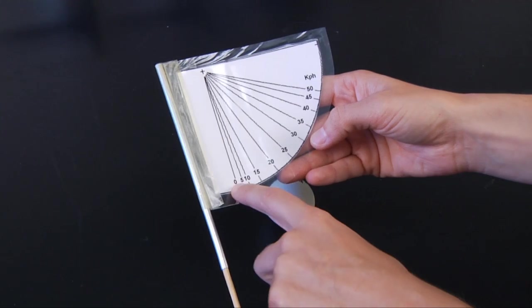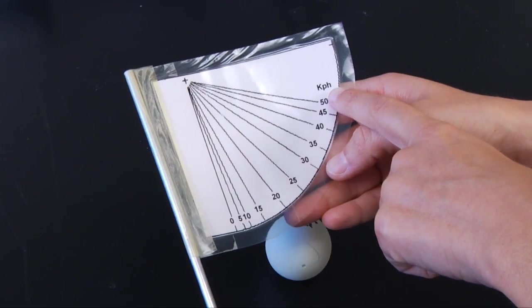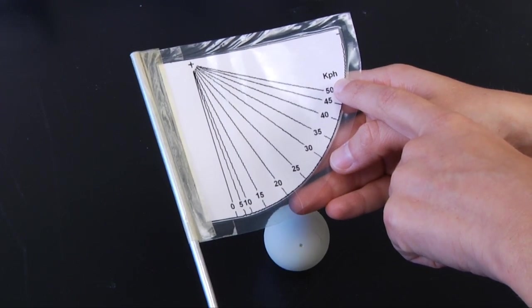And you see we've got these numbers going from zero, no wind, all the way up to about 50. And this is all going to be in kph which is kilometers per hour.